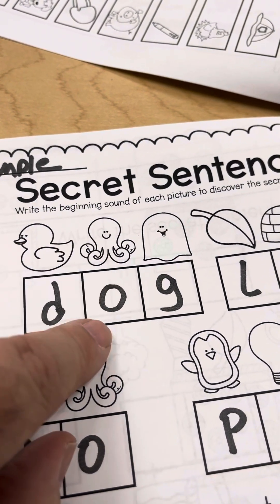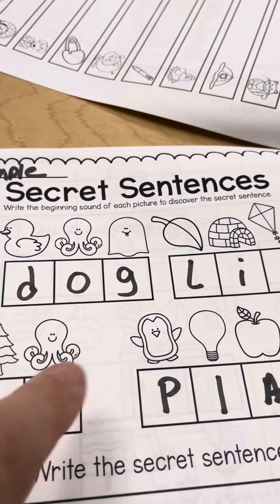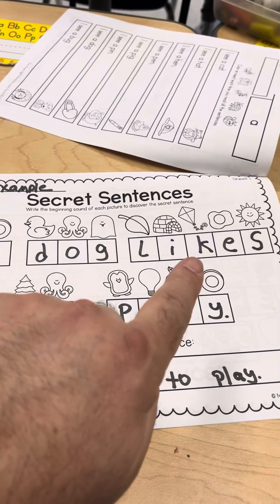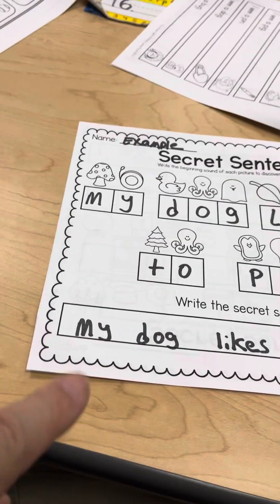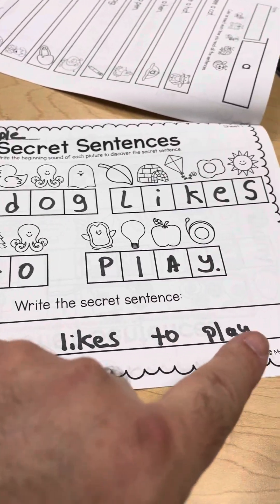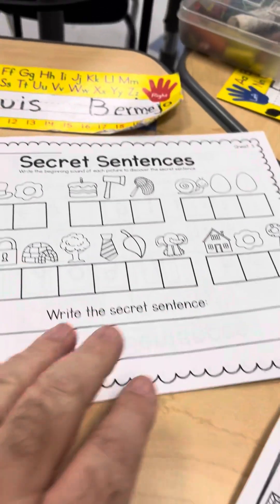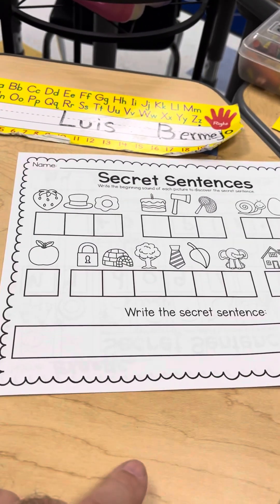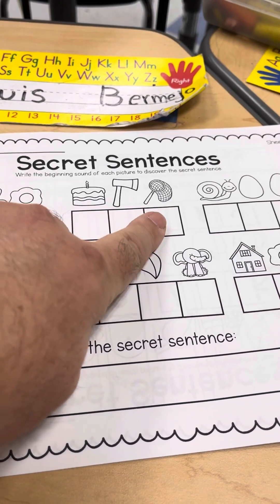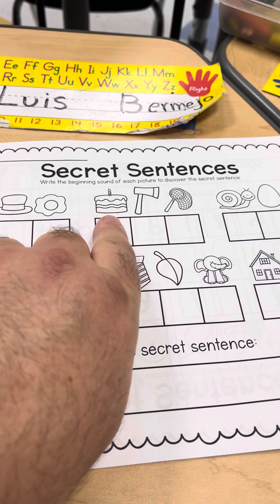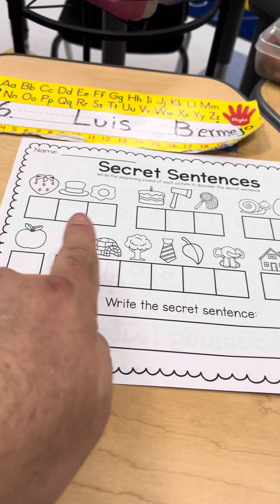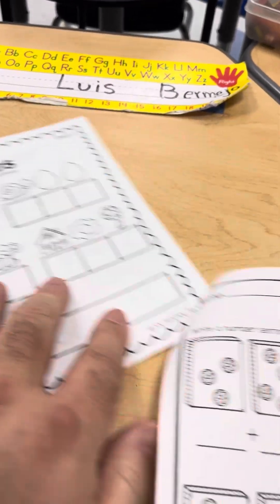Duck starts with D. Octopus starts with O. Ghost starts with G. You fill in all those letter sounds and you get a secret message: My dog likes to play. So they're going to decode the secret sentence and then write the sentence down there. That was just an example. Here's the one that they're going to do by themselves. Strawberry, hat, egg, cake, axe, net. C-A-N. Can. So they're going to use the letter sounds to decode the secret message.